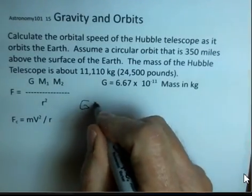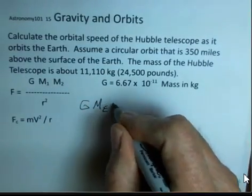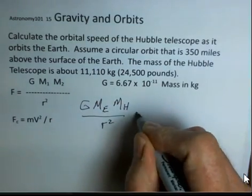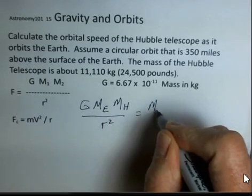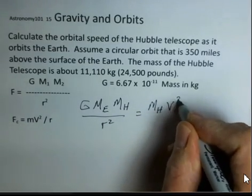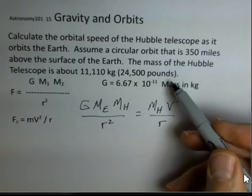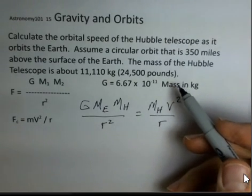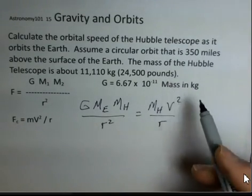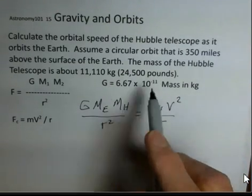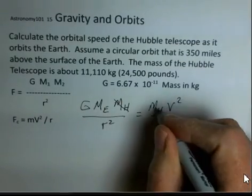So I'll write that out. G, and I'm going to put mass of the Earth, mass of the Hubble telescope over R squared equals mass of the Hubble telescope and speed squared over R. And you can see that this was extraneous information, the mass of the Hubble telescope. And this conversion kilograms to pounds, that's on the surface of the Earth.